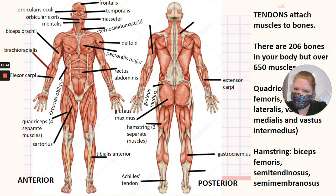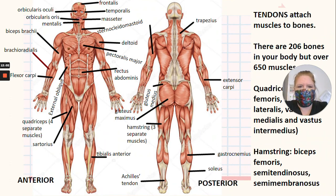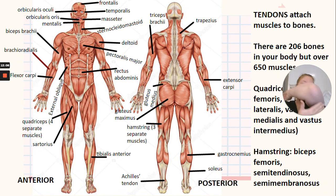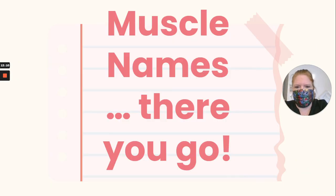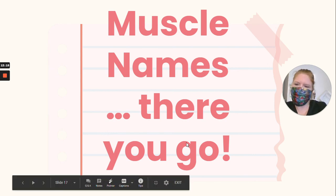The hamstrings — three separate muscles. The extensor carpi on the back of the wrist, allowing you to extend. The gastrocnemius — that's your calf muscle. The gluteus maximus, which we talked about. The soleus muscle, which wraps around the outside of your gastrocnemius. The trapezius — that trapezoid shape. And the triceps brachii in the back. And there you have it — those are all the muscle names you need to know.